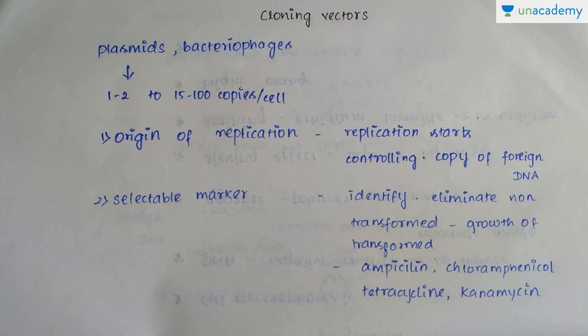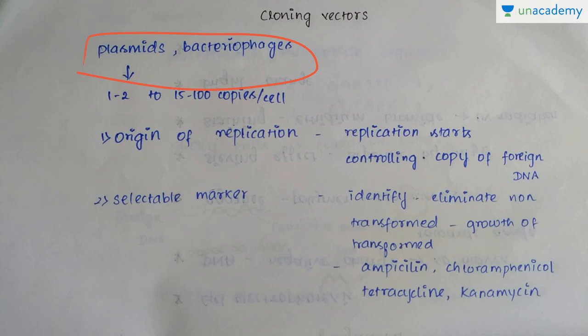Cloning vectors are usually plasmids and bacteriophages. Plasmids are circular DNA found in bacterial cells. The reason for employing these two as vectors is that they have the ability to replicate autonomously, which is not found in normal chromosomal DNA. Plasmids will be present as 1 to 2 or 15 to 100 copies per cell, and bacteriophages will be huge in number. Here we are going to discuss some of the properties of the cloning vectors.